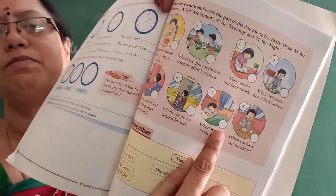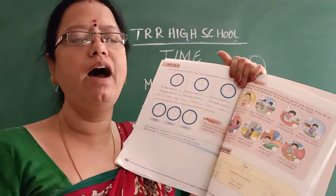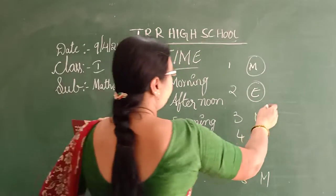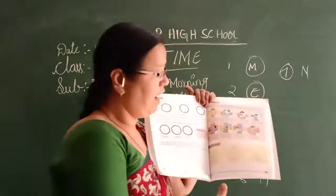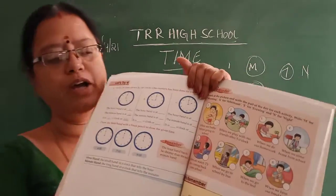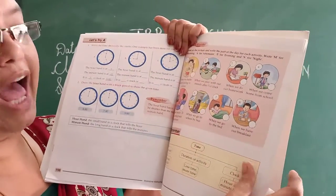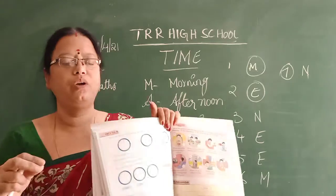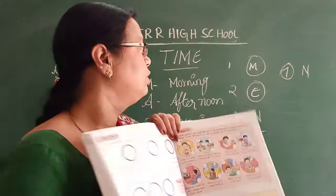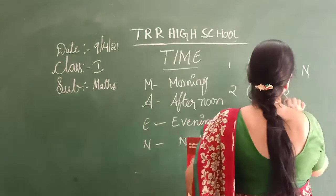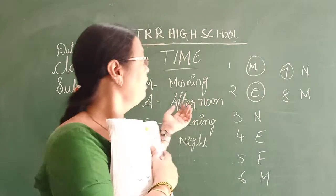In this picture, the boy is sleeping. When we go to bed at night, you have to write N for night. In the last picture, the boy is having breakfast — having breakfast is in the morning time, so in the eighth picture write M for morning.